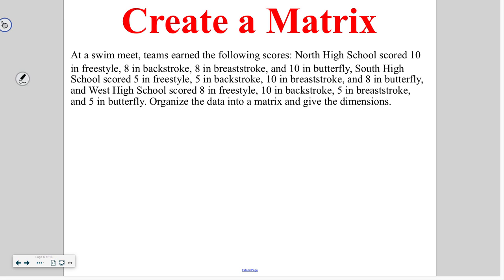So, we have three different schools that we're looking at. North, South, and West. So that means that we are going to have three rows in our matrix. So I'm going to have row one, row two, and row three. When we're looking at North, we have four different events. Freestyle, backstroke, breaststroke, and butterfly. So we're going to take and we're going to plug in those North scores, starting with ten for freestyle, eight for backstroke, eight for breaststroke, and ten for butterfly. So we've got our four different columns now.